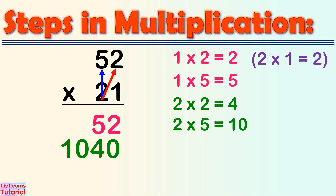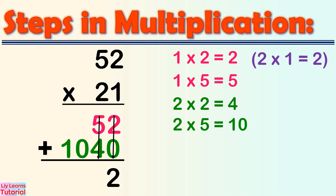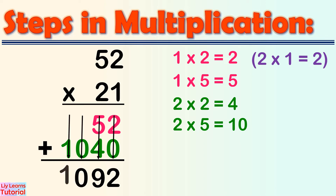Step 5: Add the partial products that we got from steps 1 to 4, starting from the 1s place going to the left. 2 plus 0 equals 2. 5 plus 4 equals 9. Bring down 0 and bring down 1. The answer is 1,092.